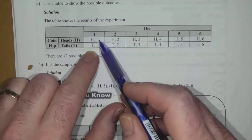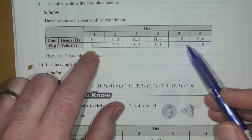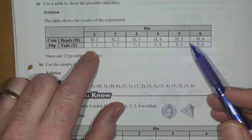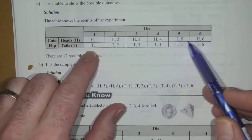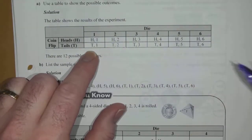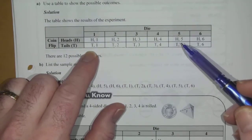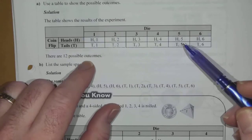So, there are 12 possible outcomes when you flip a coin and roll a single die. And this lists all the different possibilities. These are all unique. None of these are duplicated within your chart. So, this chart shows you the sample space for flipping a coin and rolling a die. And there are 12 possible outcomes.